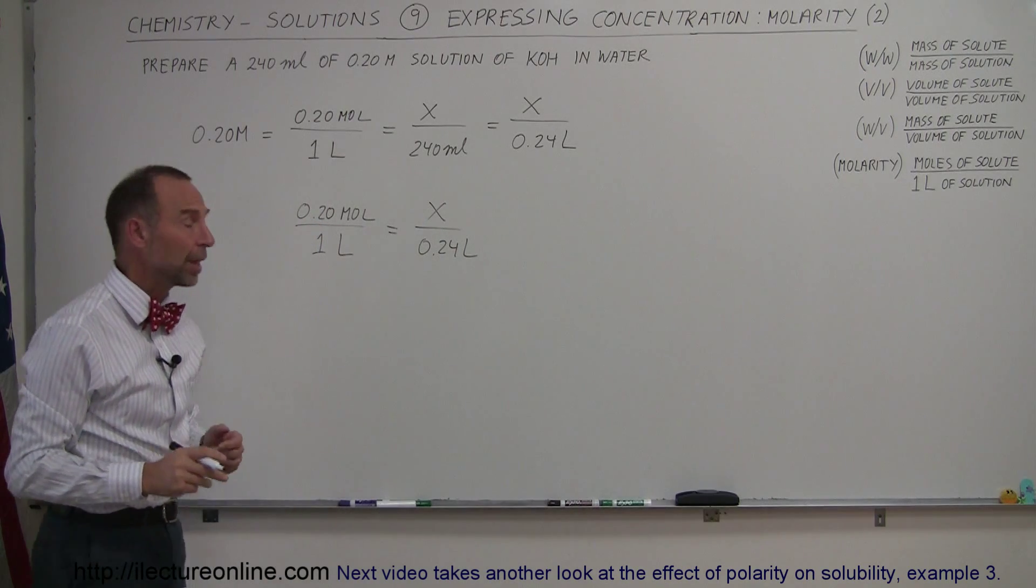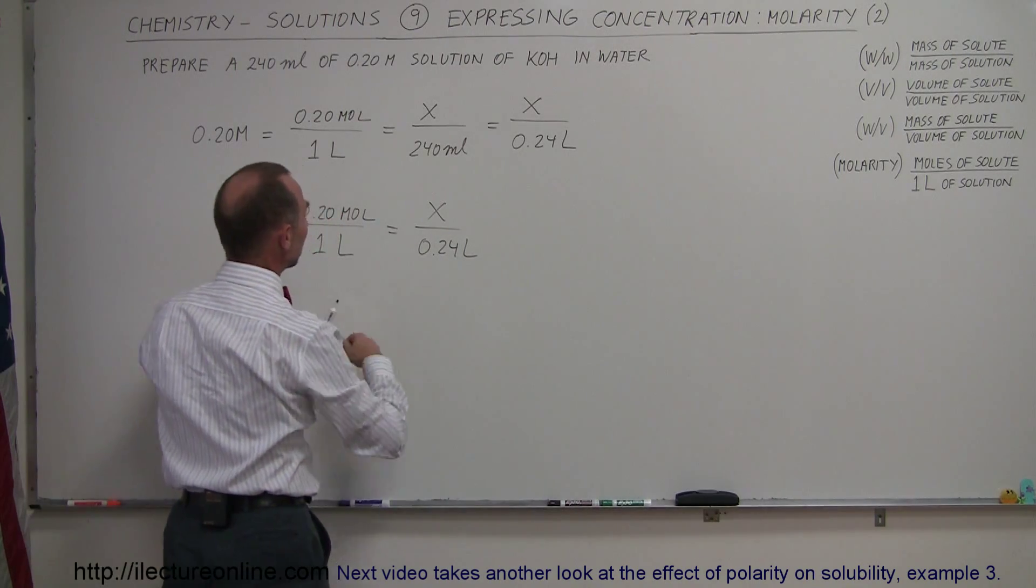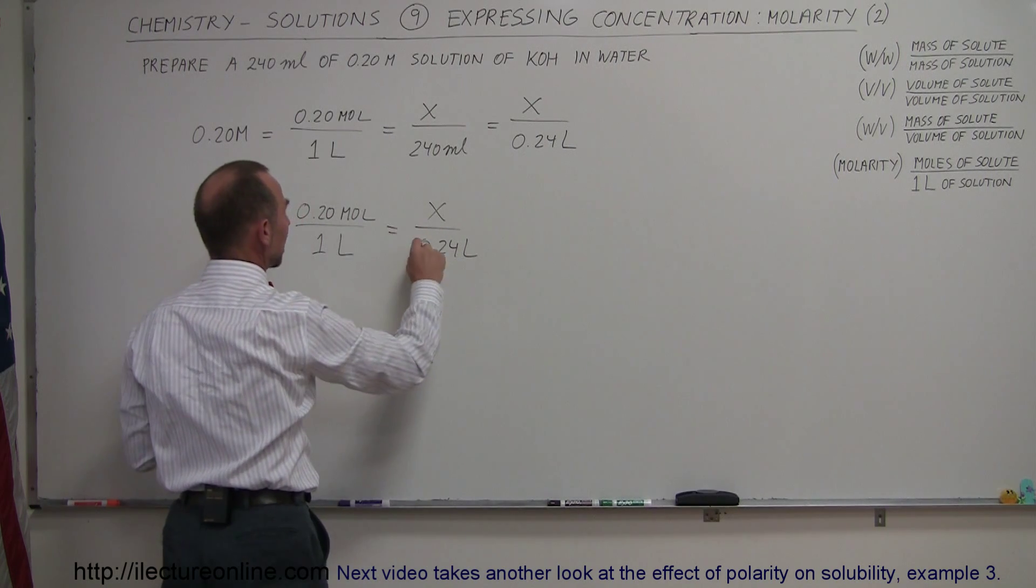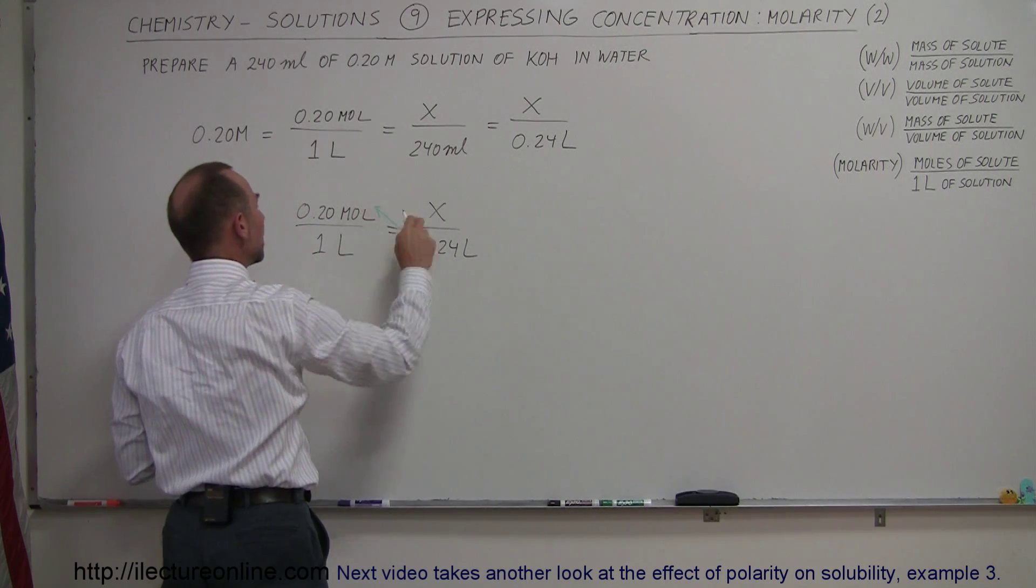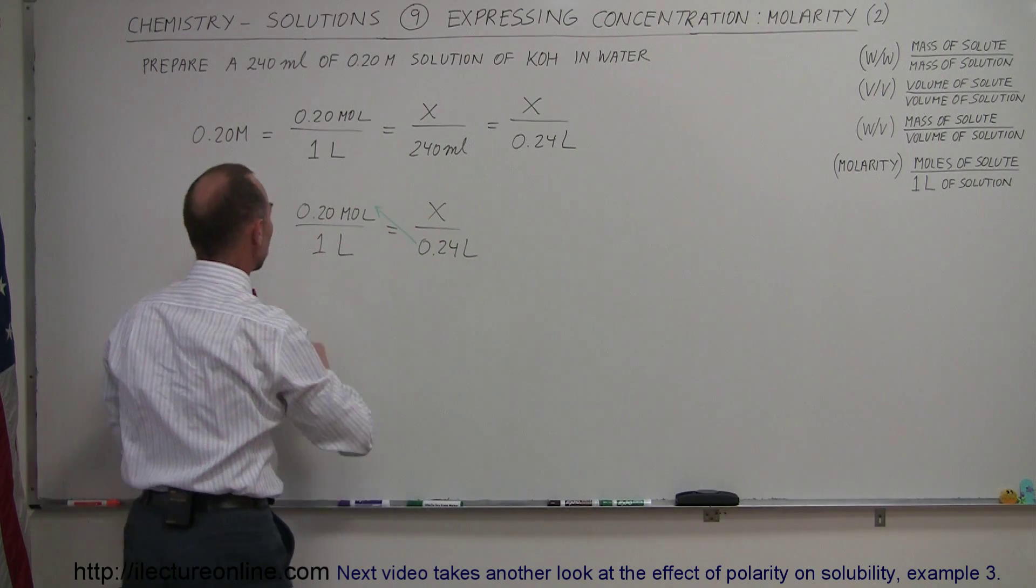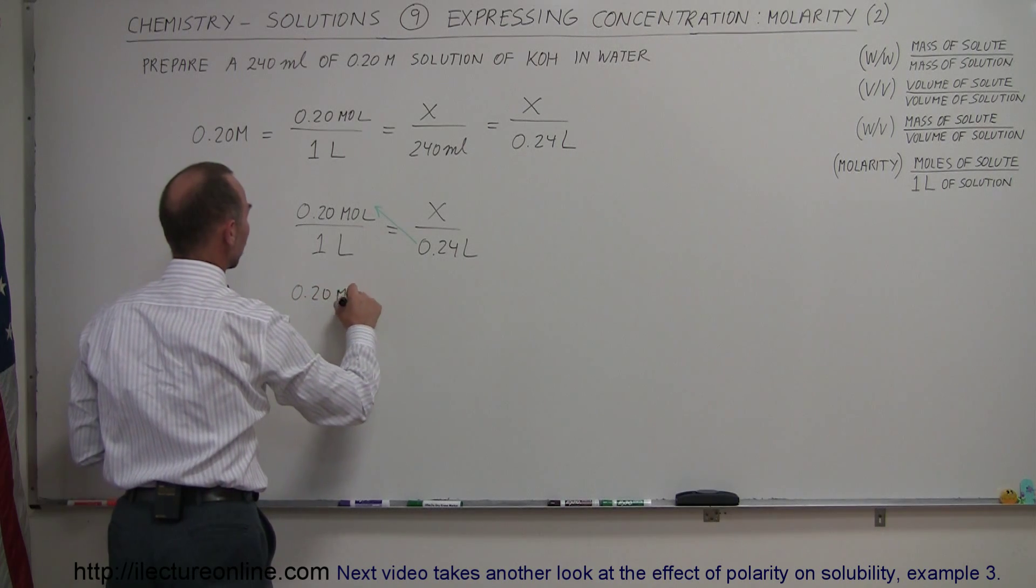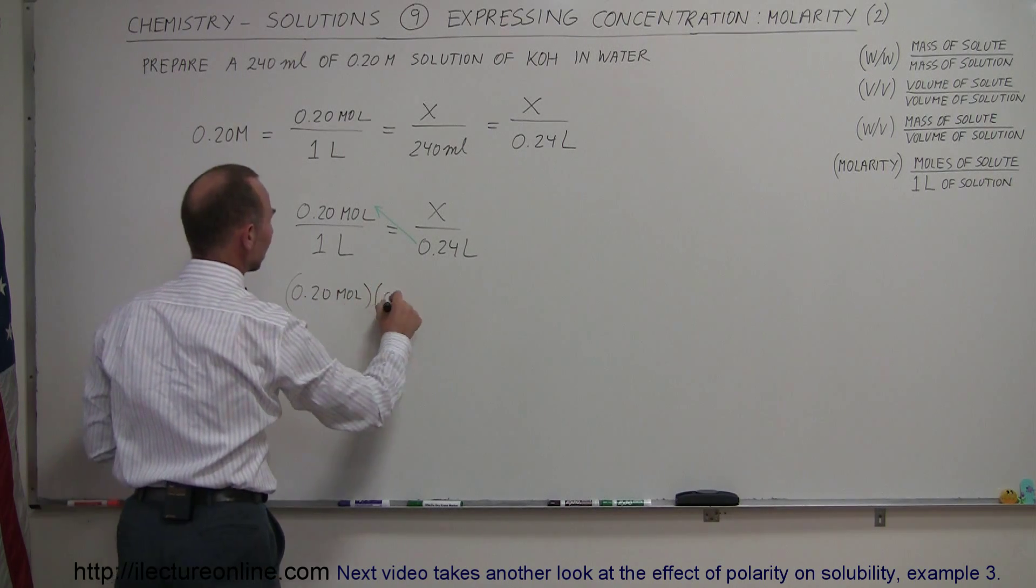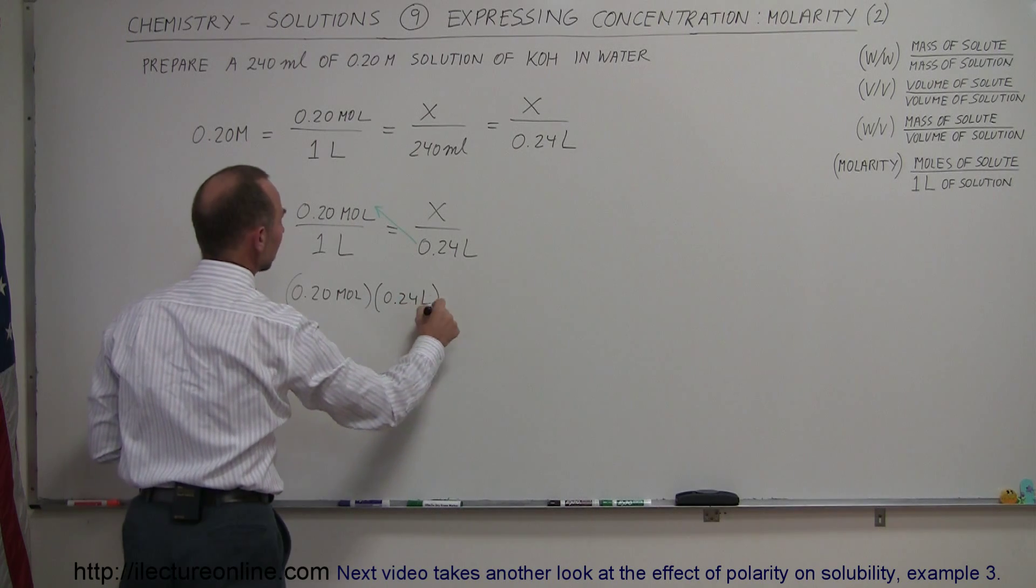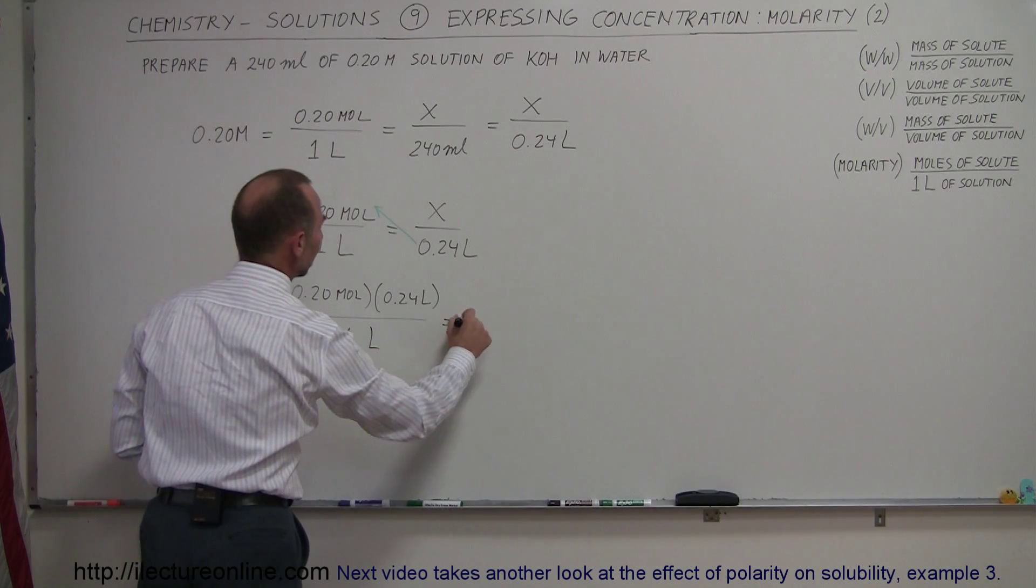Now we have to solve that for X. Now since we have two fractions that are equal to each other, we can cross-multiply. In other words, we can move anything across the diagonal. So we're going to move the 0.24 liters to the other side, and that goes from the denominator to the numerator. So we can write that 0.20 moles times 0.24 liter divided by 1 liter is equal to X.